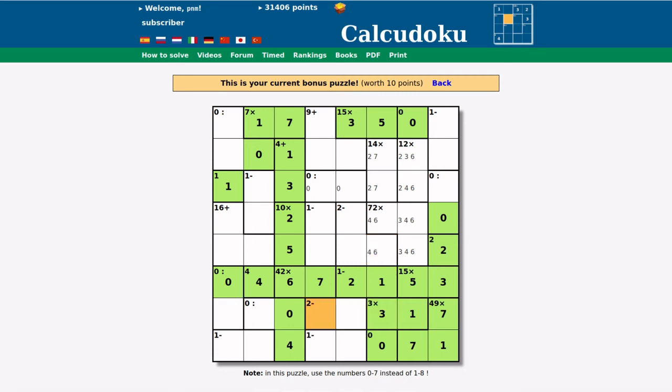The next cage to look at could be this one down here, the 2 minus. Because what do we have left in this row? A 2, 4, 5, 6. So this could be a 2 and a 4, or a 4 and a 6. This means that the 5 should go here or here.